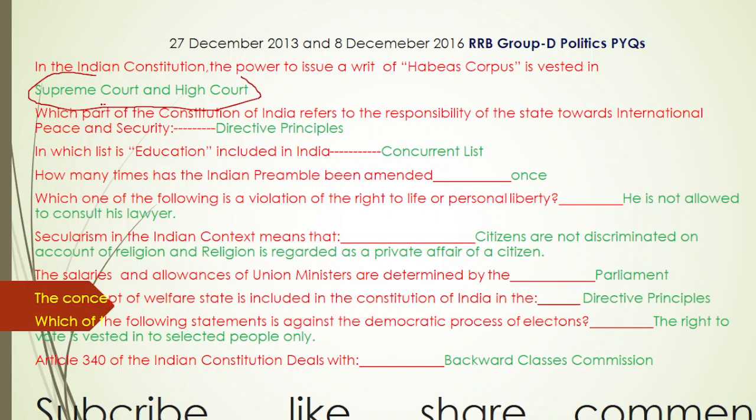Which of the following statements is against the democratic process of elections? The correct answer is: the right to vote is vested in selected people.